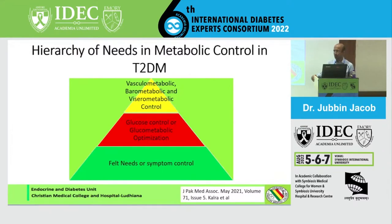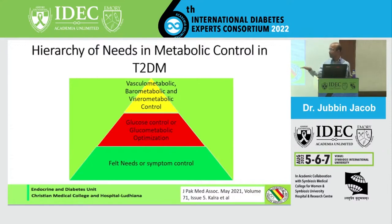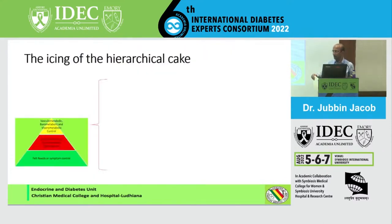The first thing to start with is symptom control — addressing the patient's felt need. If the patient came with an infection, you need to treat the infection. If the patient came with hyperosmolar symptoms, you need to treat that. The second level is glucose control, because the patient who comes to a diabetologist is focused on glucose numbers, and if he's not seeing those changes, he's going to get unhappy. The third part of the pyramid is what I call the icing on the cake, which is what most of us are focusing on — but we have to focus on the base of the pyramid first.